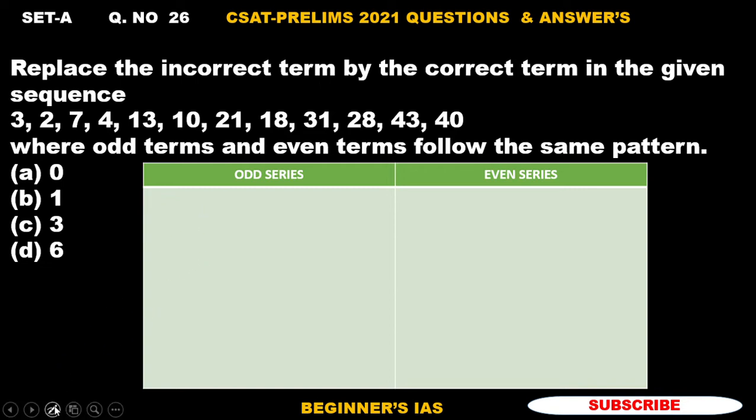Here, the odd terms are 3, 7, 13, 21, 31, 43 and then even terms are 2, 4, 10, 18, 28, 40.